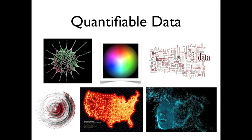Quantifiable data is something you can represent in numbers or values. A couple of examples: the first is a relational mapping — quantifiable data that has been visualized. Another is a word cloud, where the size of each word represents the popularity or frequency of that term in the data set. There is demographic data visualized on a map, and three-dimensional coordinate data. I'd also like to concentrate on the color picker, which is also quantifiable data.